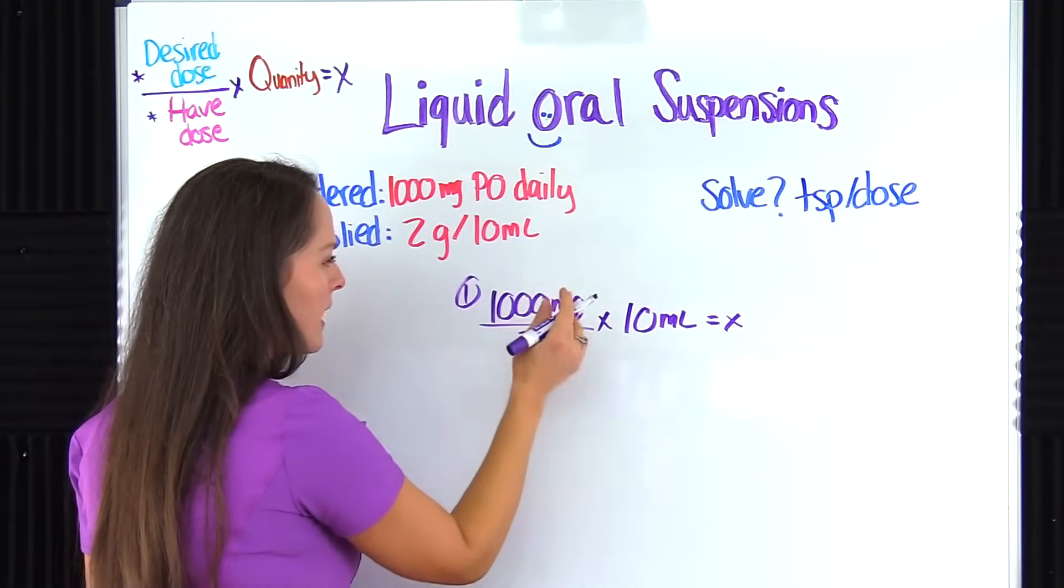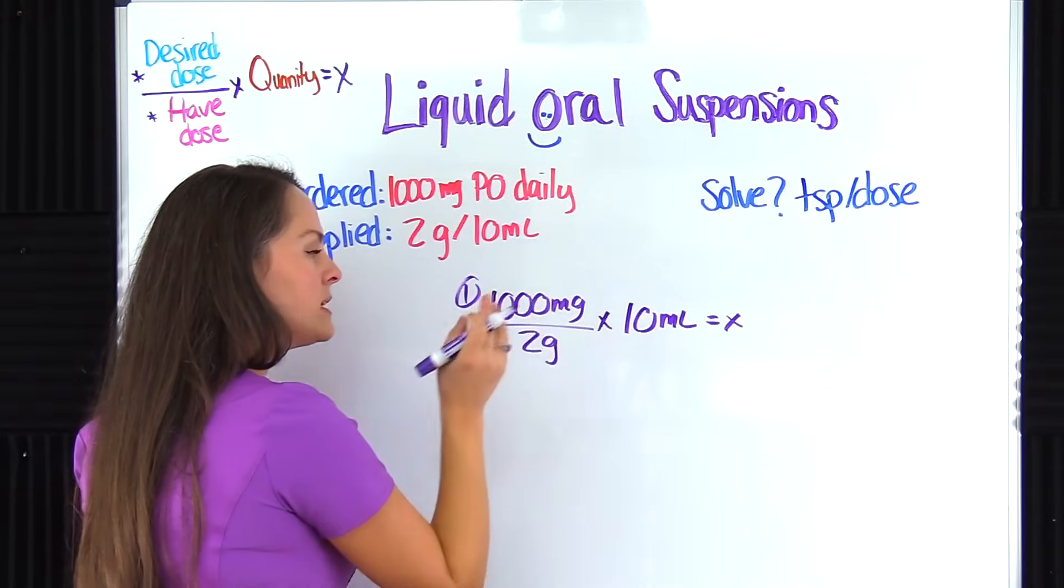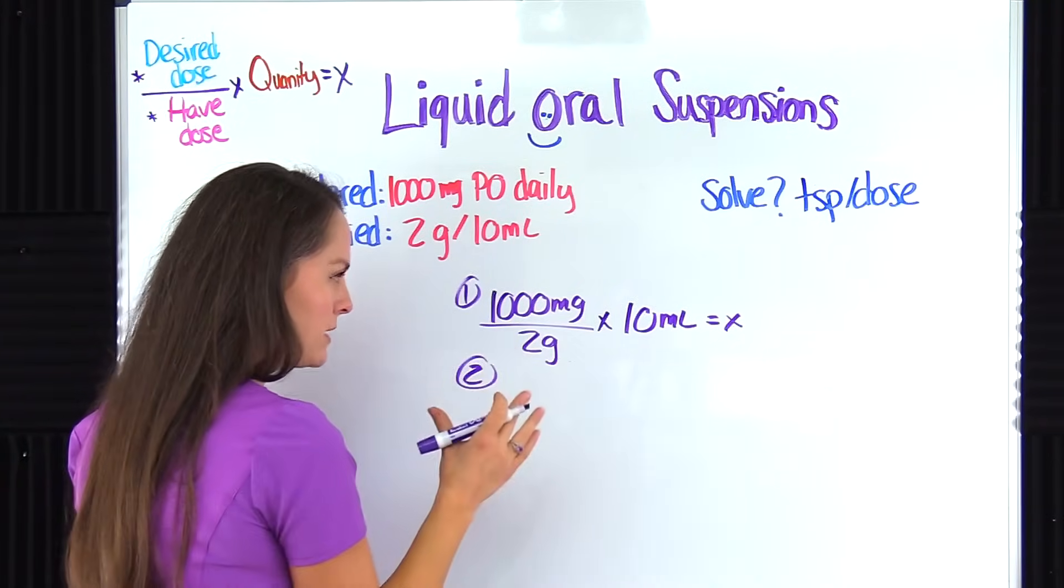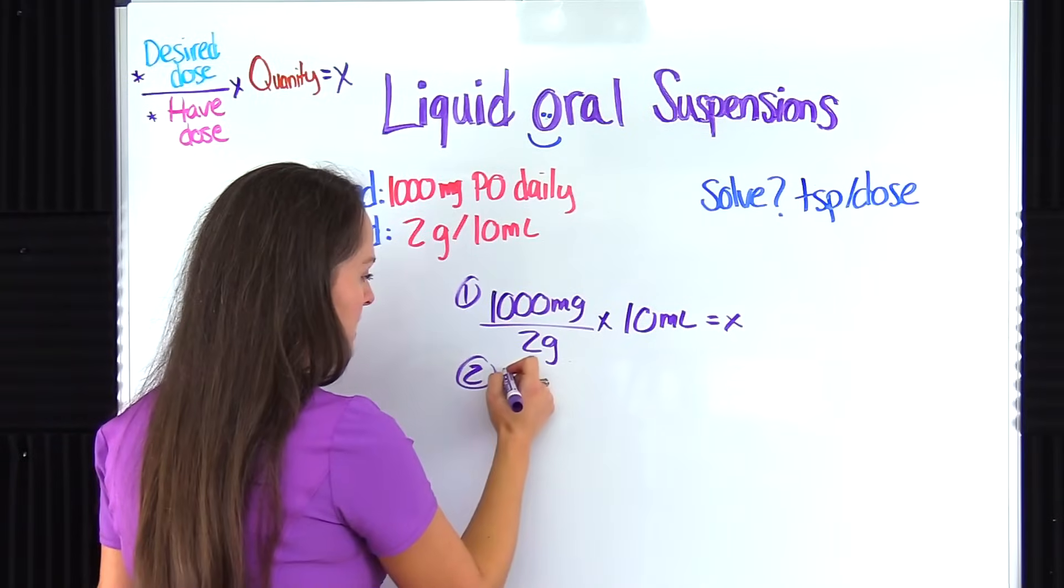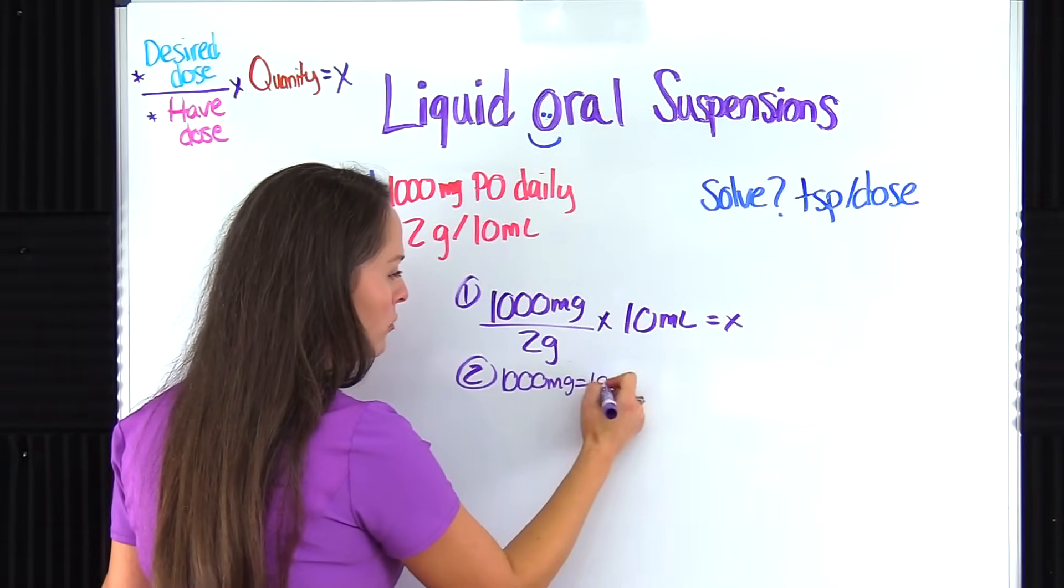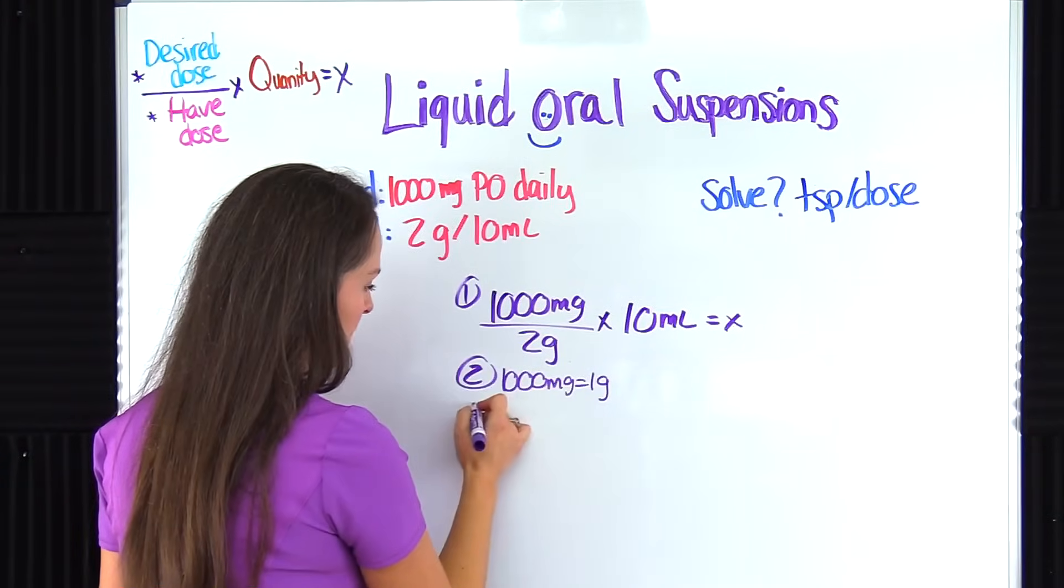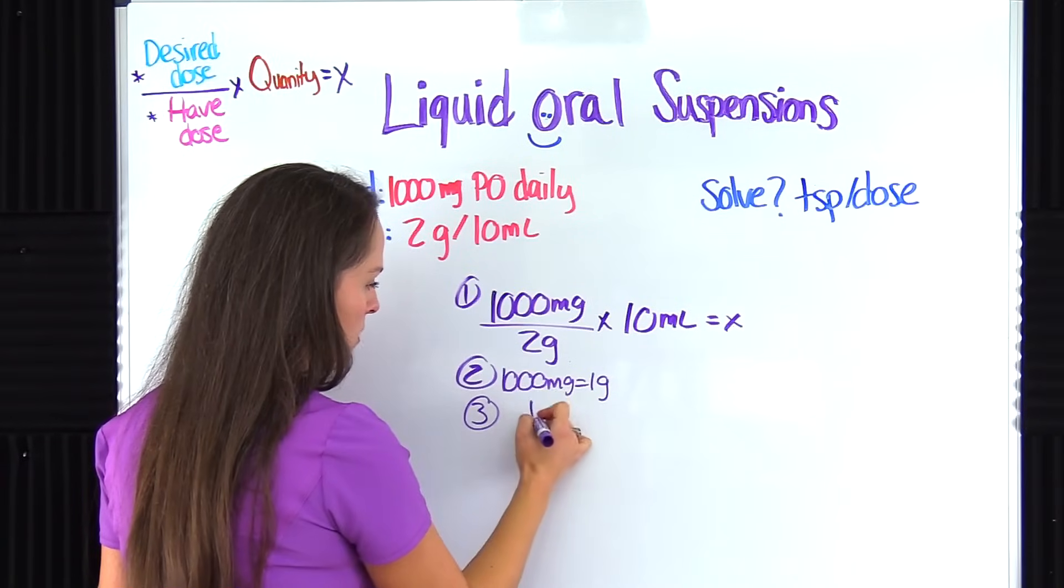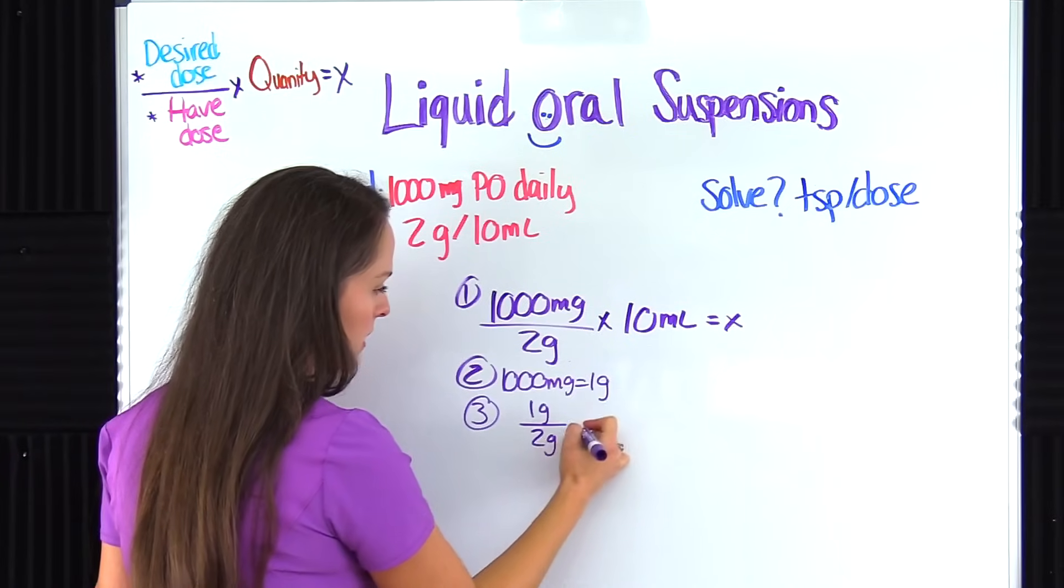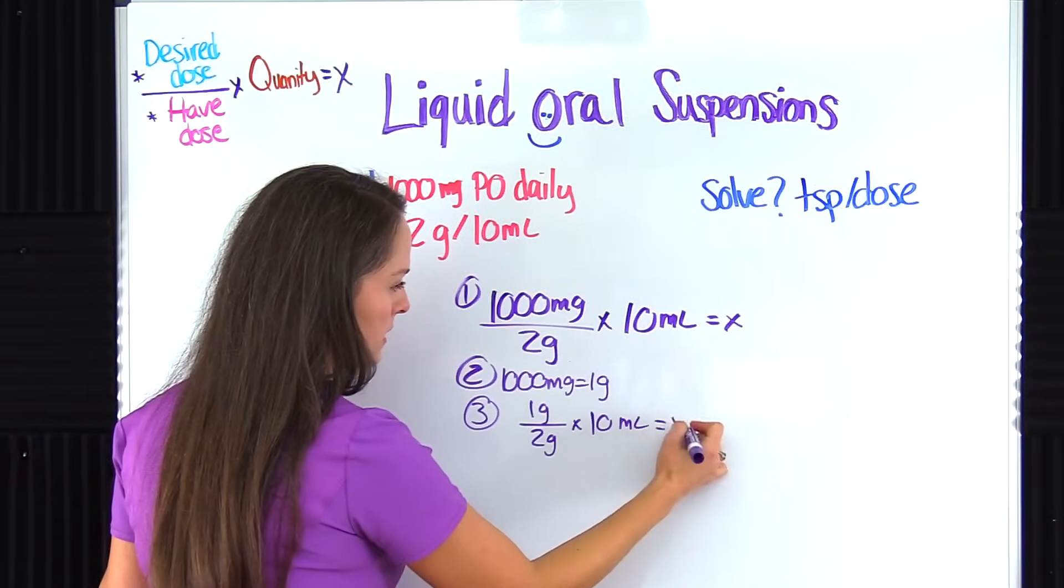Okay, so that was step one. Now let's get this part up here, our desired dose, into grams because right now it's in milligrams. So we know from our metric table that 1,000 milligrams is equal to one gram. So that's going to be one up there. So we'll go ahead and do step three. We'll put one gram over what we already had plugged in, over 2, times the 10 mls equals x.